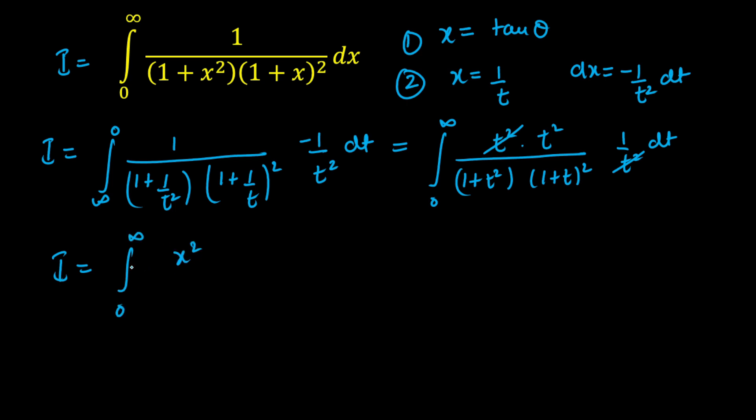We will get this as integration 0 to infinity x square upon 1 plus x square whole multiplied by 1 plus x whole square into d of x. There will be no change in the integration.